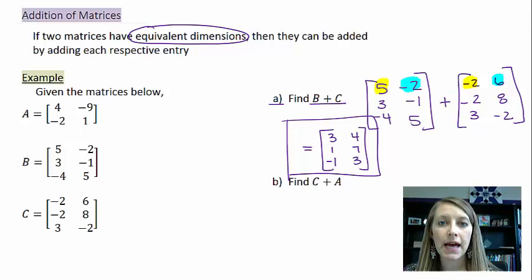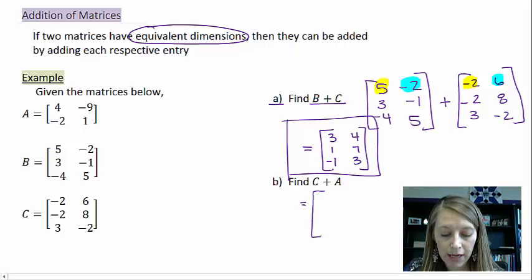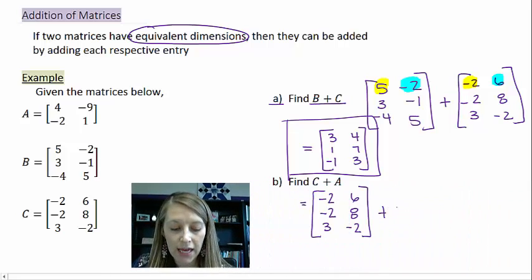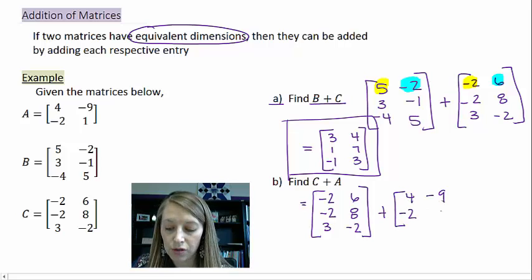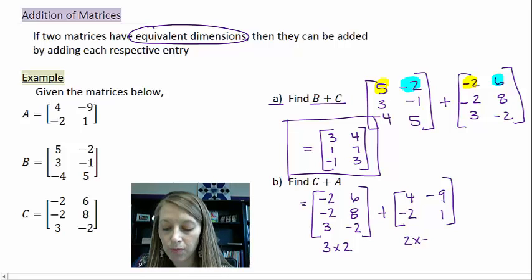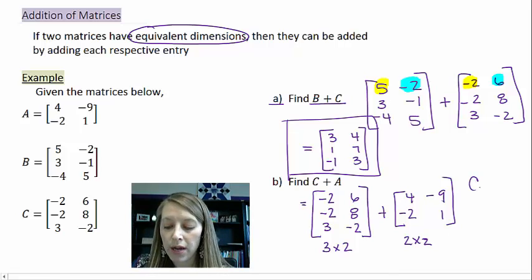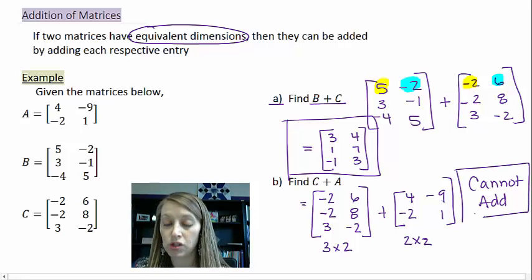Now let's see if we can add C plus A. My C matrix is three by two, but my A matrix is two by two — the dimensions are not the same. So our answer is that we cannot add these matrices, because they do not have the same dimensions. That's all we can say; we cannot take it any further.